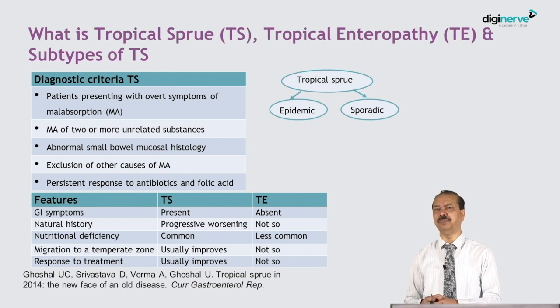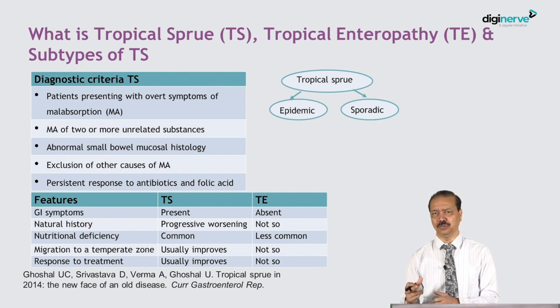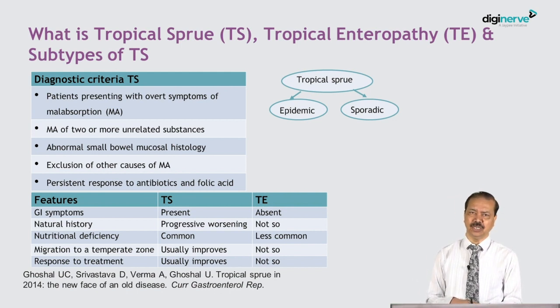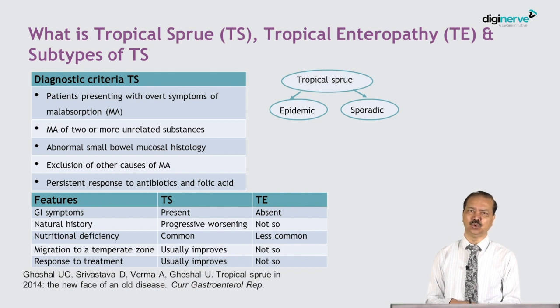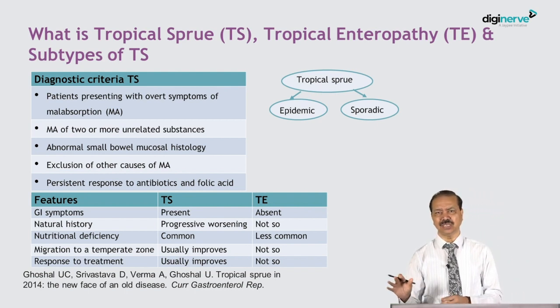Tropical sprue differs from tropical enteropathy. Tropical sprue is a symptomatic disease with chronic diarrhea and features of malabsorption, whereas tropical enteropathy is asymptomatic. If you do duodenal biopsy in people living in the tropics, they may have slight blunting of villi — Indian populations have been shown to have lower villus height compared to Western populations, and this subclinical change is called tropical enteropathy.